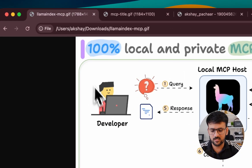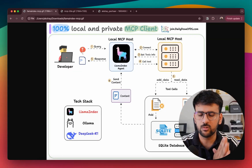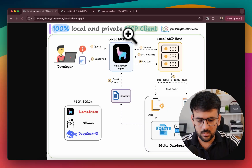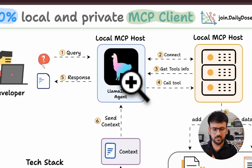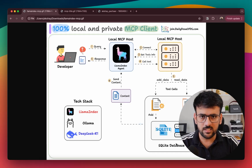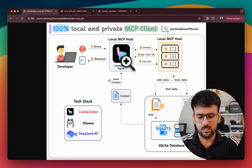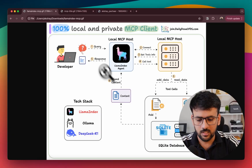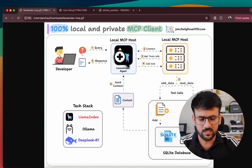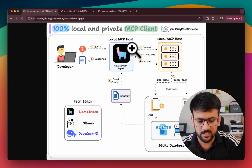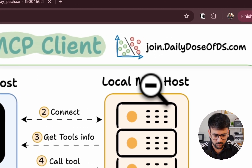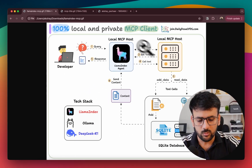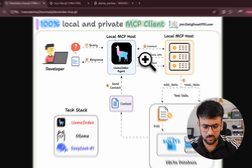Let's understand the architecture of the system we're going to build. We are building a local MCP host which has a LlamaIndex agent powered by locally running LLMs using Ollama. This agent works together with our custom-made client. The user comes up with a query, which is received by our agent, and then the agent uses the client to connect with the local MCP server. The client connects with the MCP server and gets information about all the tools that are available.